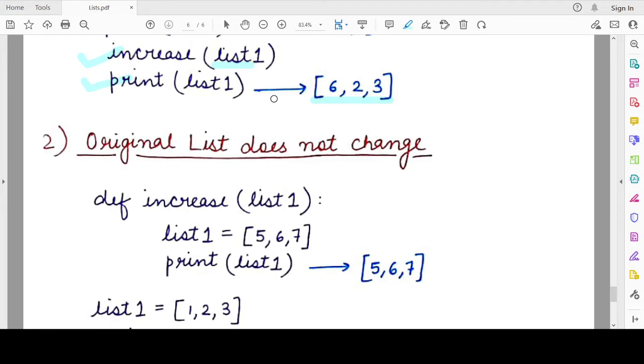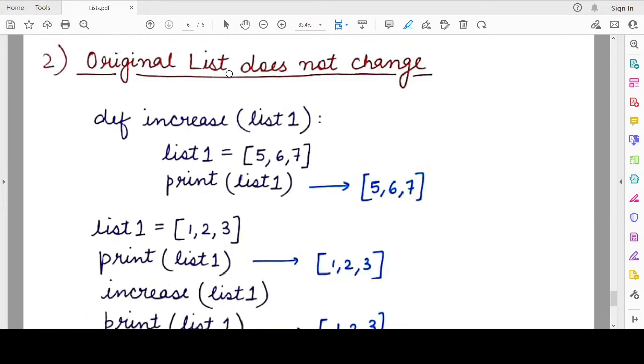The second scenario can be when the original list that is passed to the function does not change. When does that happen? This situation will happen when you create a local copy of the list within the function.